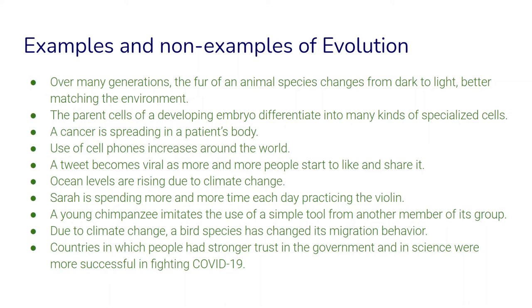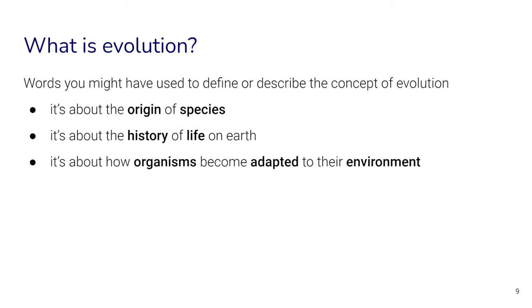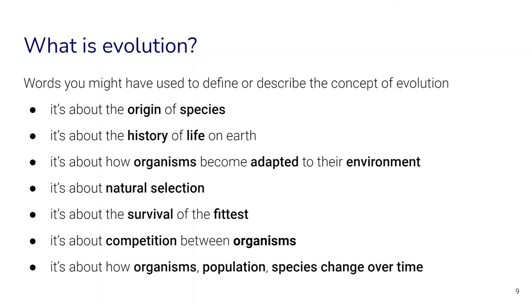Rather than give you one answer, let's think more deeply about how you and others think about this concept of evolution. What words might you use to define or describe it? You might say it's about the origin of species, the history of life on earth, how organisms become adapted to their environment, natural selection, the survival of the fittest, competition between organisms, or how organisms, populations, and species change over time. These are common answers.